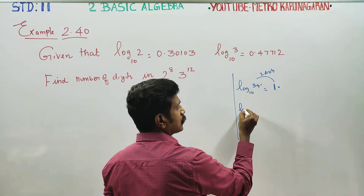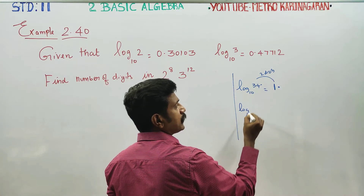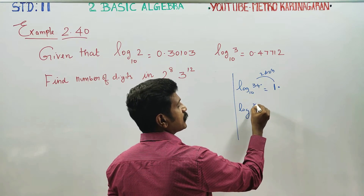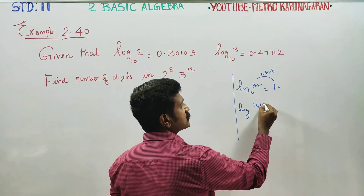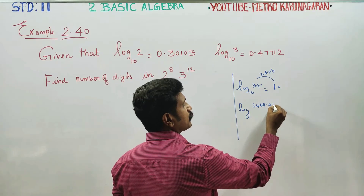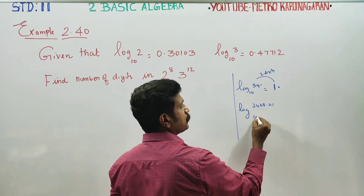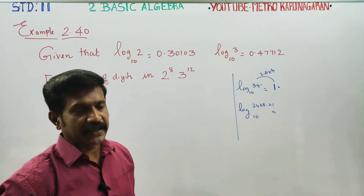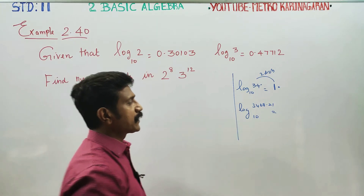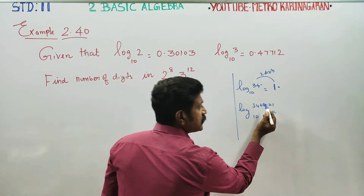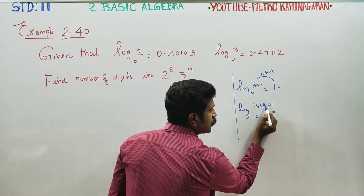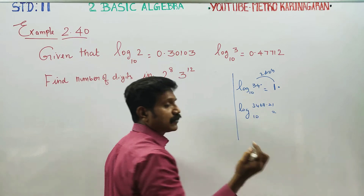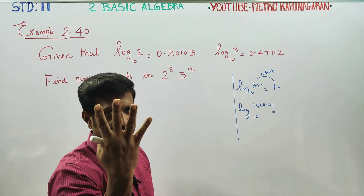Logarithm of 3.46821 to the base 10. The decimal value: logarithm to the base 10 gives decimal 1.23444. The characteristic tells us how many digits the number has.